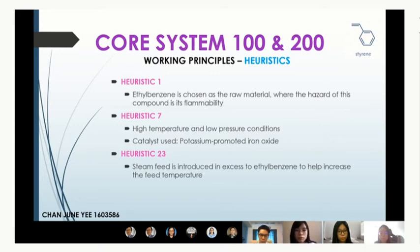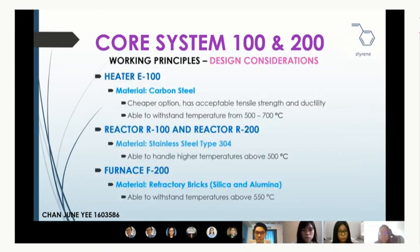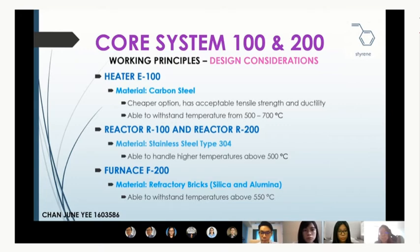Heuristic 23 is also applied: since the reaction is endothermic, inert steam feed is used in excess to control the high temperature. For design considerations, heater E100 is made of carbon steel — cheaper with acceptable tensile strength and ductility, handling temperatures from 500 to 700 degrees Celsius. Both R100 and R200 are made of stainless steel type 304, as reaction temperatures exceed 550 degrees Celsius, beyond carbon steel's limit for prolonged use. The furnace is made of refractory bricks to handle temperatures above 550 degrees Celsius.